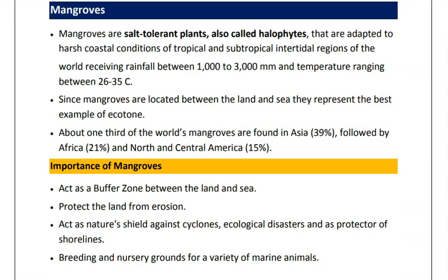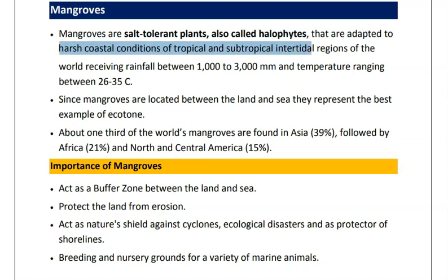Moving to the next topic: mangroves. Mangroves are plants located between the land and sea and they are an example of ecotone — a transition area between two biomes. The land biome is the forest biome and the second is the marine biome. Mangroves are salt-tolerant plants called halophytes, adapted to the harsh coastal conditions of tropical and subtropical intertidal regions, receiving rainfall between 1000 to 3000 mm and temperatures ranging between 25 to 35 degrees centigrade.